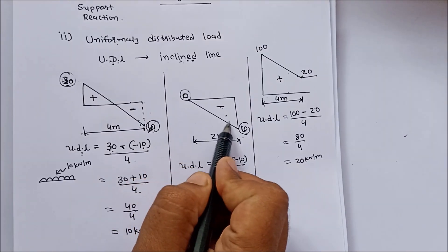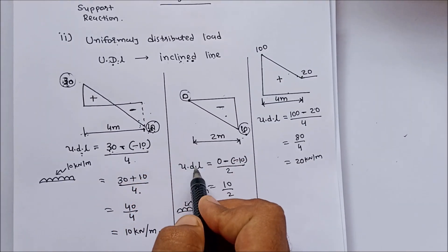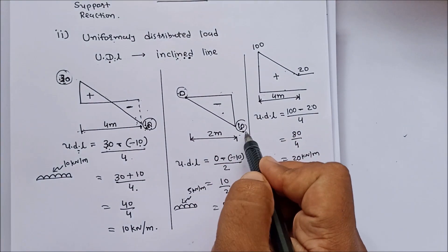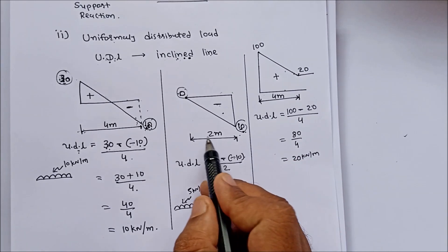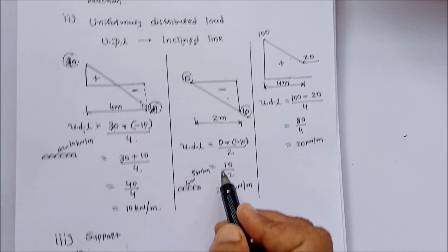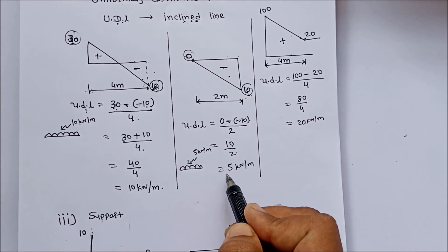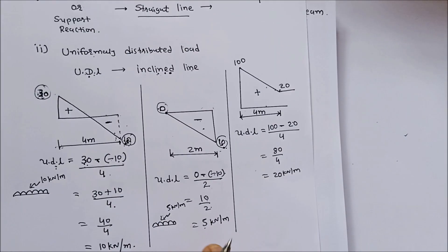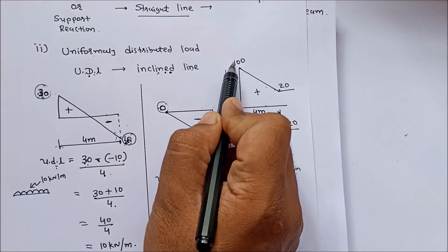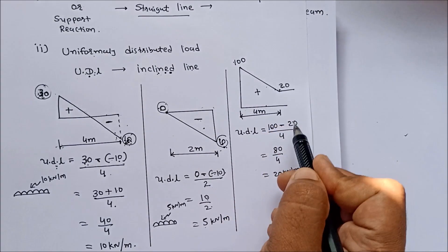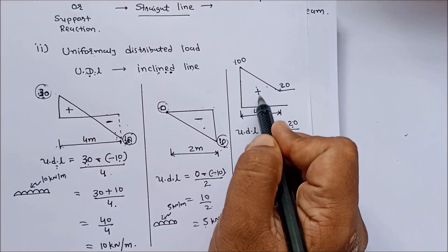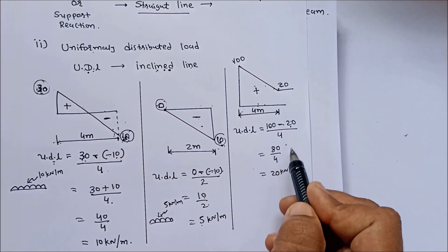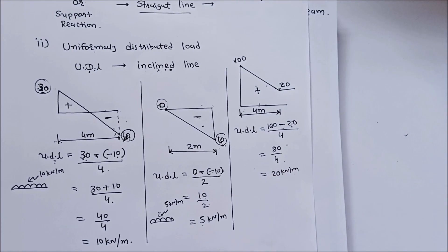Let's see another example. Where there is an inclined line there is always a UDL. UDL equals left side force (0) minus right side force (minus 10), divided by length 2. So 0 minus (minus 10) divided by 2 equals 10 divided by 2, giving UDL of 5 kN per meter. In another example with an inclined line: UDL equals left side force 100 minus right side force 20 (positive, above the line), divided by 4. So 100 minus 20 equals 80, divided by 4, giving 20 kN per meter.